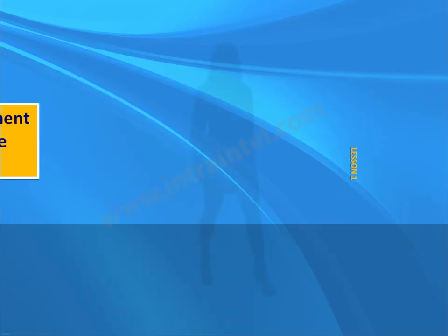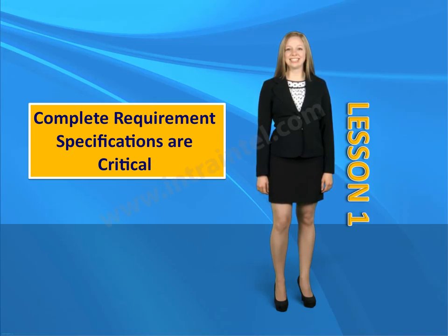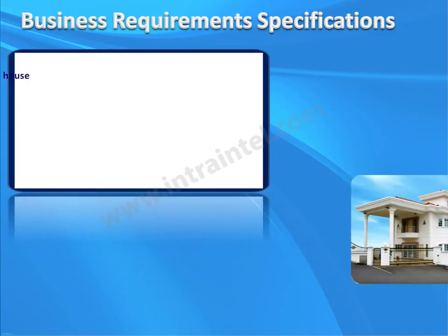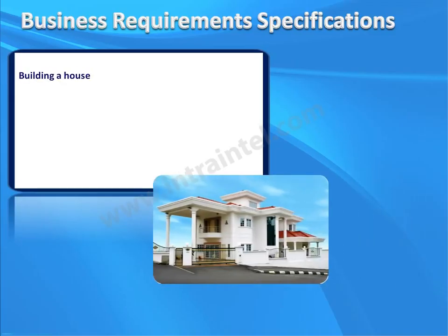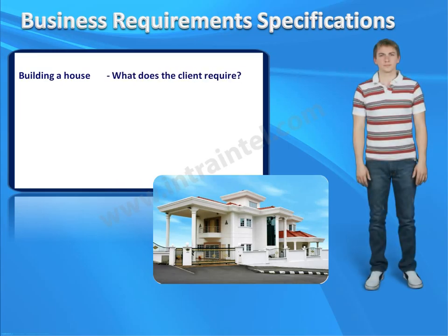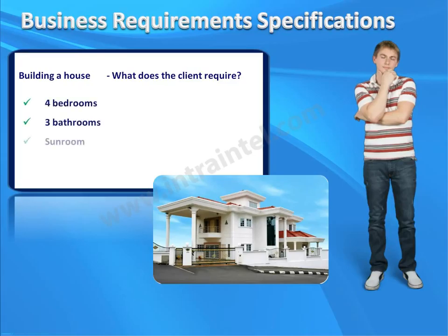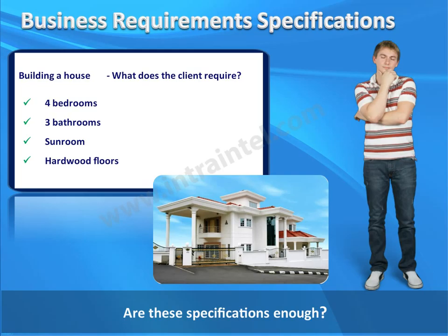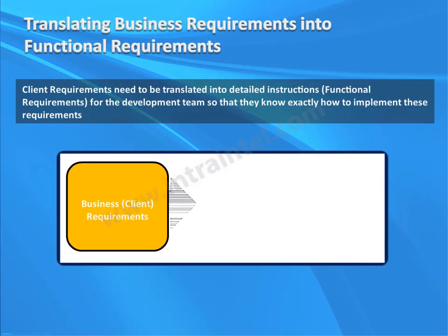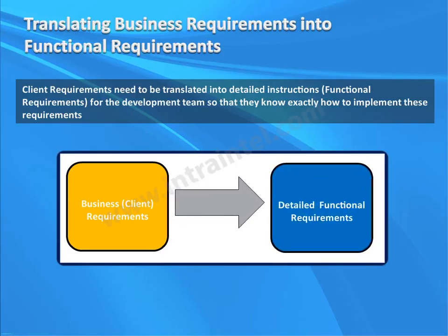Let's begin with the first lesson: Complete requirement specifications are critical. Suppose you are a building contractor tasked with building a house. Your first order of business would be to ask the question: what does the client require? Your client's answer could be four bedrooms, three bathrooms, a sunroom, hardwood floors, etc. How do you translate these client requirements into detailed functional requirements for your development team — the building crew?